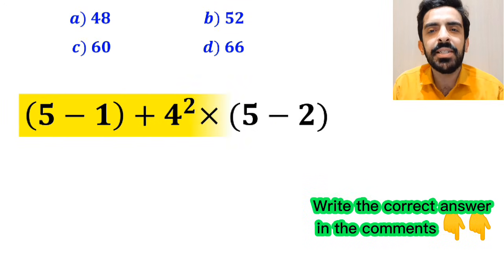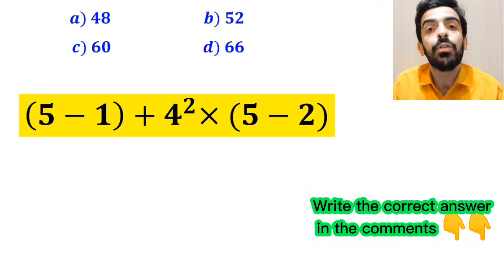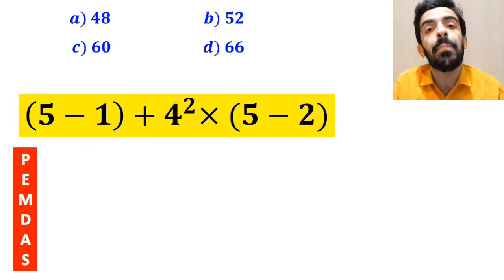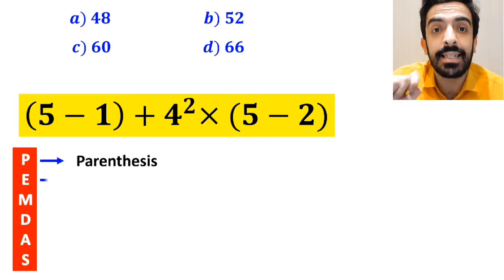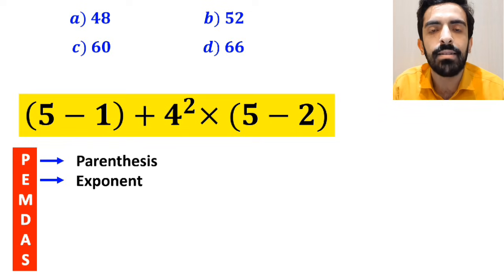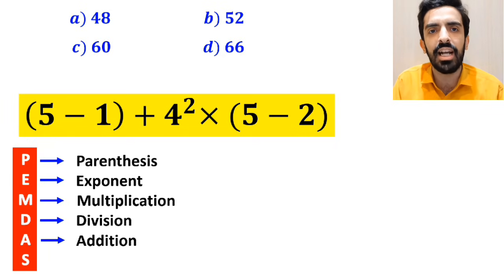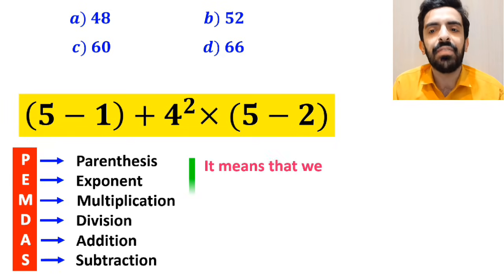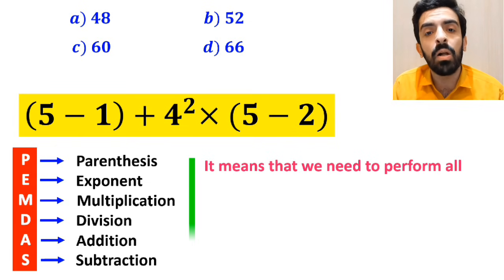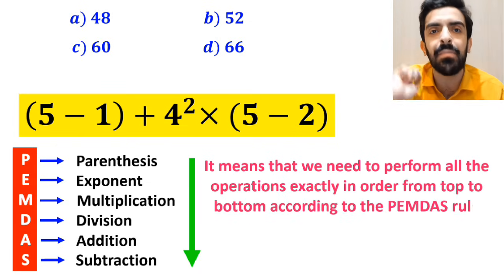Now let's go through this question step by step. To solve this problem, we must follow the PEMDAS rule. P stands for parenthesis, E stands for exponent, M stands for multiplication, D stands for division, A stands for addition, and S stands for subtraction. We need to perform all operations exactly in order from top to bottom according to the PEMDAS rule.